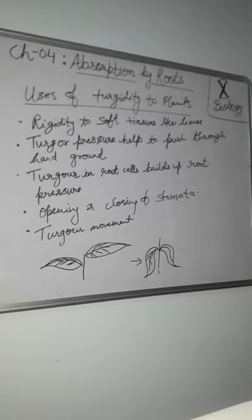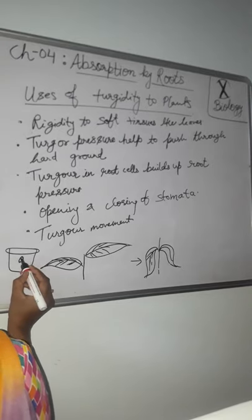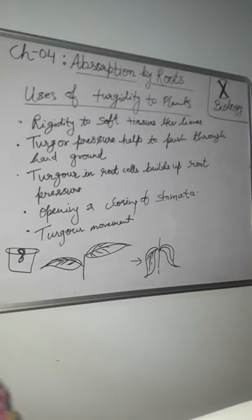Second use: turgor pressure helps to push through hard ground. In mushrooms and seedlings, you can see the seedling push through the ground due to turgor pressure. This is due to turgidity, especially seen in mushrooms. Sometimes the roots of certain trees have been seen to crack the walls or concrete floor of an adjoining building, which is due to turgor pressure.